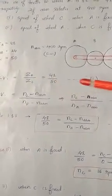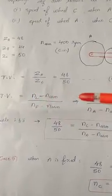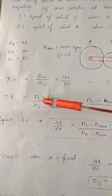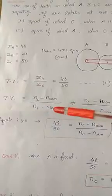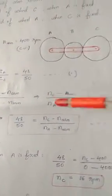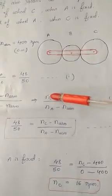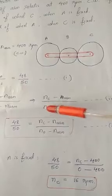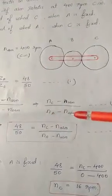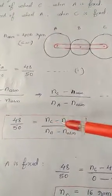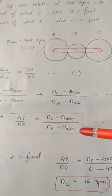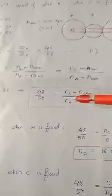So the train value equals ZA/ZC = 48/50 — that is teeth on the first gear divided by teeth on the last gear. This is equation one. The train value is also given by the speed of the last gear minus the speed of the arm, divided by the speed of the first gear minus the speed of the arm: (NC − NR) / (NA − NR). This is equation two. Equating both: 48/50 = (NC − NR) / (NA − NR).